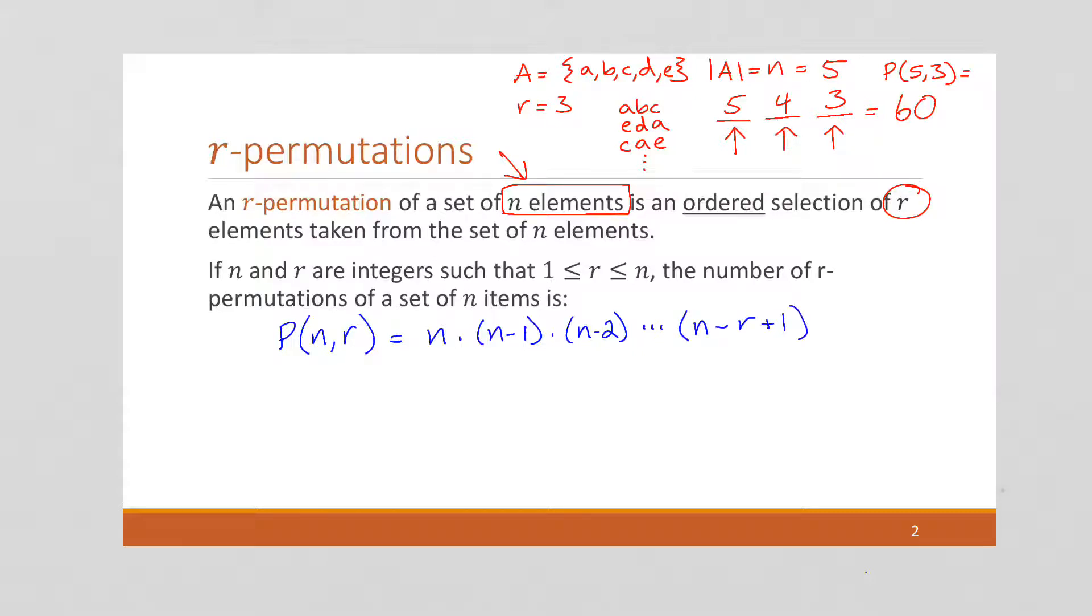And that may seem a little odd, but if we look at our example up here, it's going to work out. Because there we had 5 choosing a subset of length 3, and so n was 5, r was 3.